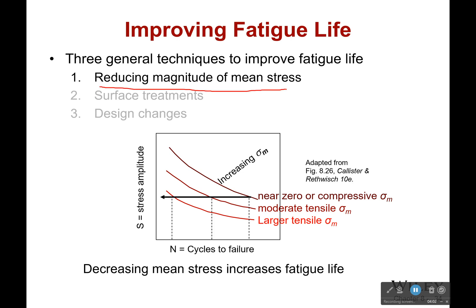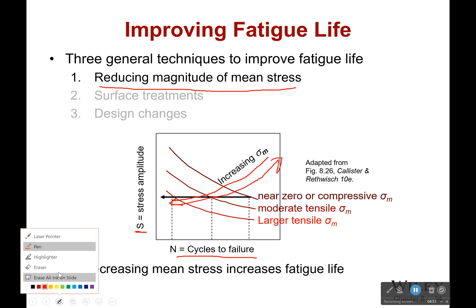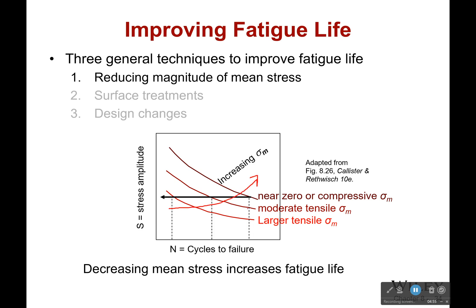The first way is to reduce the magnitude of the mean stress. On the graph of stress amplitude versus number of cycles to failure, if we decrease our mean stress it's going to increase our fatigue life. As we decrease our mean stress, things get better and better — more cycles to failure.